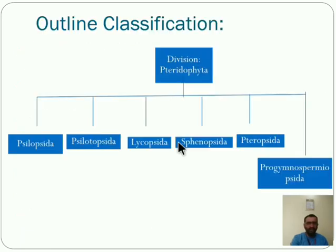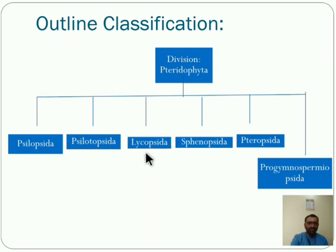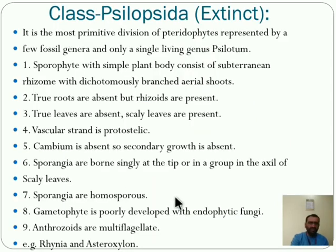Let us see the outline. Division Pteridophyta is again divided into these six classes: Psilopsida, Psilotopsida, Lycopsida, Sphenopsida, Pteropsida, and Progymnospermopsida. These are the outline of classification of Pteridophyta. Let us see in detail.